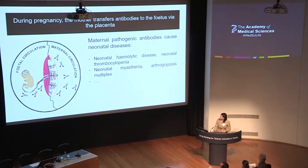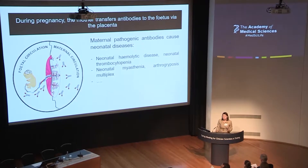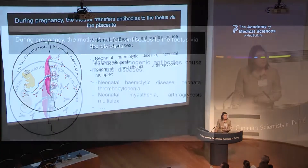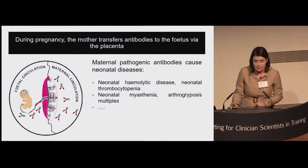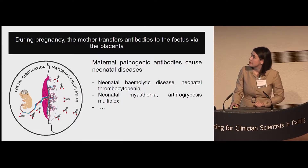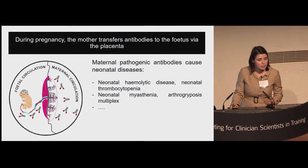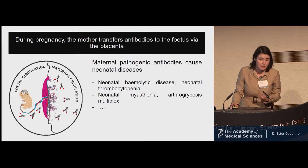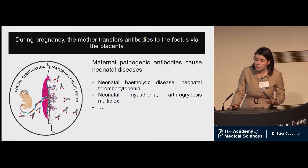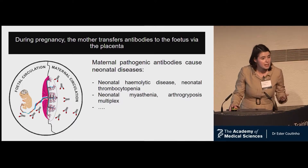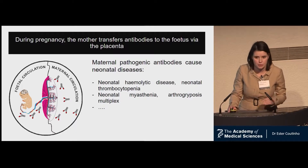During pregnancy, the mother transfers IgG antibodies to the fetus, which is of course beneficial for the neonate. But if the mother has circulating pathogenic antibodies, this can lead to disease. There are many such examples: neonatal hemolytic diseases, neonatal myasthenia gravis, to mention just a few.